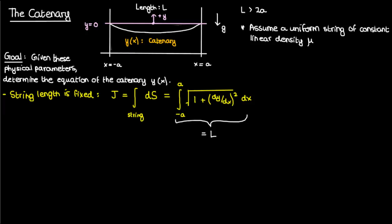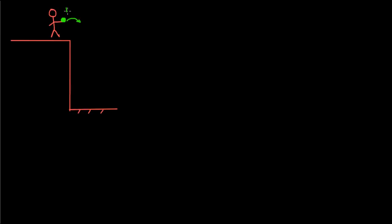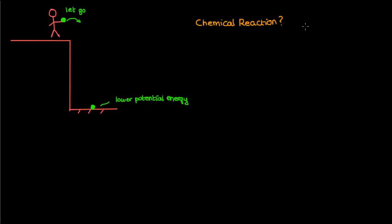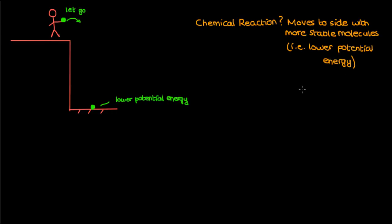What about the integral representing the actual functional that we want to optimize? This is a calculus of variations problem. Let's go back to basic physics: if I had a ball and let go of it from high above the floor, it's obviously going to drop to the ground, because going to the ground means a region of lower potential energy. In the absence of external forces, the ball prefers to move to a region of lower potential energy. Similarly, a chemical reaction prefers to move to the side with more stable molecules, since stable molecules have lower potential energy. So in the absence of external forces, physical systems prefer to move to a configuration of lower potential energy.